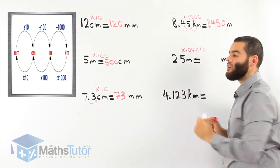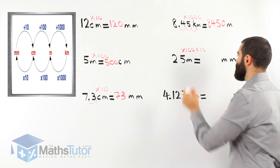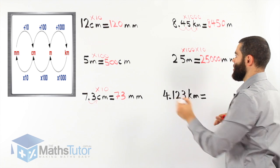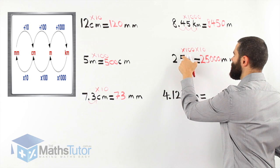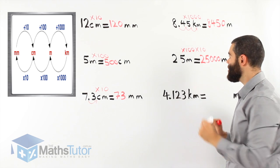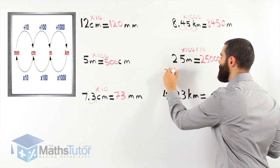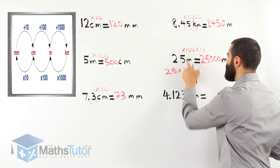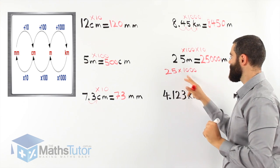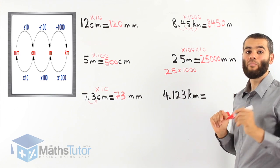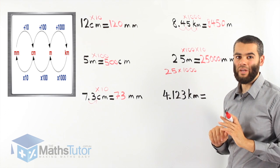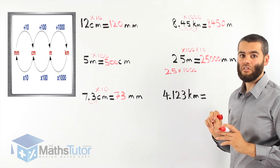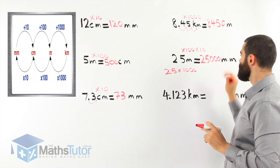25 times 100 is 2,500, then times 10 gives 25,000. You can do 25 times 100 times 10 in your calculator, or you can just go 25 times 1,000, because there are three zeros. So, 25,000 millimetres in 25 metres. This is different because we're going through two units — from metres all the way to millimetres.